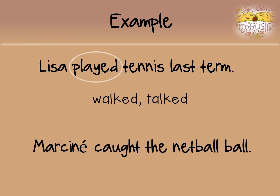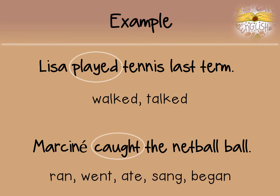Irregular verbs change completely or they stay the same. For example, the word 'hit' stays 'hit' in the past tense. 'Marcenay caught the netball.' The word 'caught' is the verb in the sentence and it's an irregular verb. Other examples are words like ran, went, ate, sang, and began.